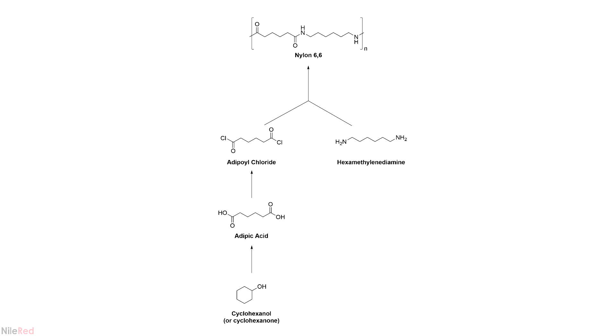Nylon is an extremely important plastic polymer that's used to make clothing and a whole bunch of other products. There are a few different types of nylon, and the one that I want to make is specifically known as nylon 6-6. In order to make it, I'm going to be following this reaction scheme.